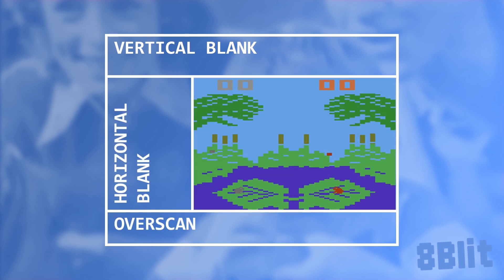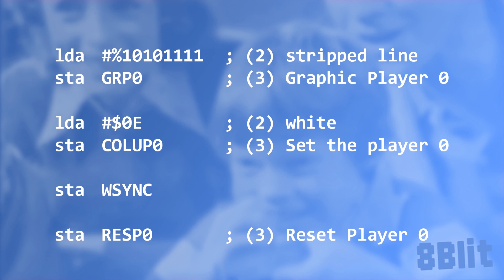If we strobe the register at any point during the horizontal blank period — which is the first 68 color clocks of a scanline — then this is exactly where the player graphic will be drawn. However, if we introduce a little delay after the WSync to bring us to a point after the horizontal blank, then we can position it further away from the left side. We can do this in our code by using the macro function Sleep. All this does is tell the assembler to insert a number of no-op instructions into the binary file. A no-op instruction is just that — no operation — it just wastes machine cycles, more specifically two machine cycles. It's important to note that the Sleep function is not practical for your game code, nor can you change the number of machine cycles it uses while your code is running.